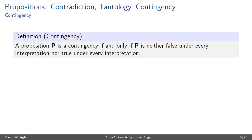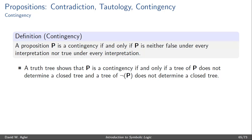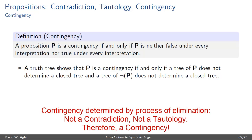A proposition P is a contingency if and only if P is neither false under every interpretation nor true under every interpretation. In other words, a proposition P is a contingency if it's neither a contradiction nor a tautology. A truth tree will show that P is a contingency if and only if P does not determine a closed tree and the negation of P does not determine a closed tree.